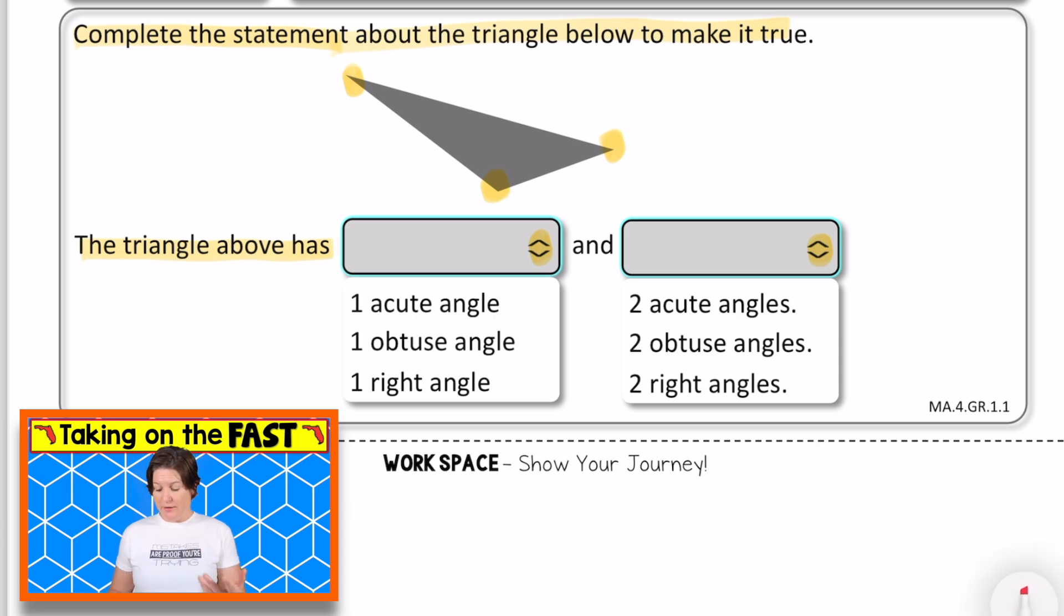So this triangle above, since we're only identifying one, would be one obtuse angle and two acute angles, two obtuse angles, or two right angles will be determined at the top. The two on the side were two acute angles. Pause to jot down your notes, and when you're ready, press play.